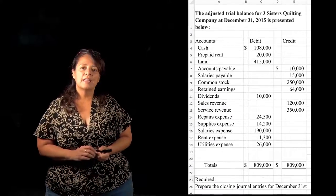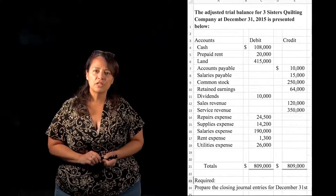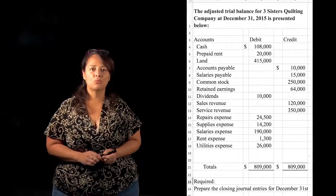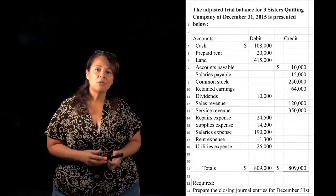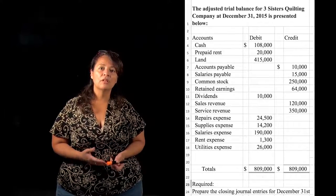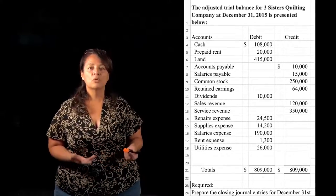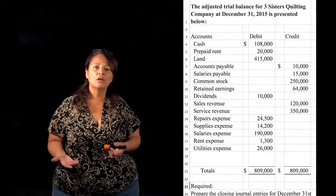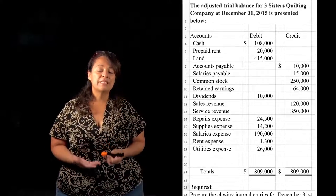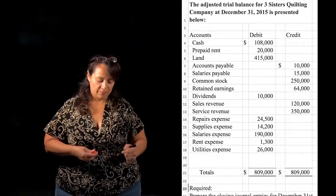If you'll refer to your trial balance, we're going to do the closing entries for this trial balance. Typically it takes three journal entries. The first thing we're going to do is close the revenue accounts. You'll remember that revenue accounts have a normal credit balance, so in order to zero them out or close the accounts we need to debit the revenue accounts.